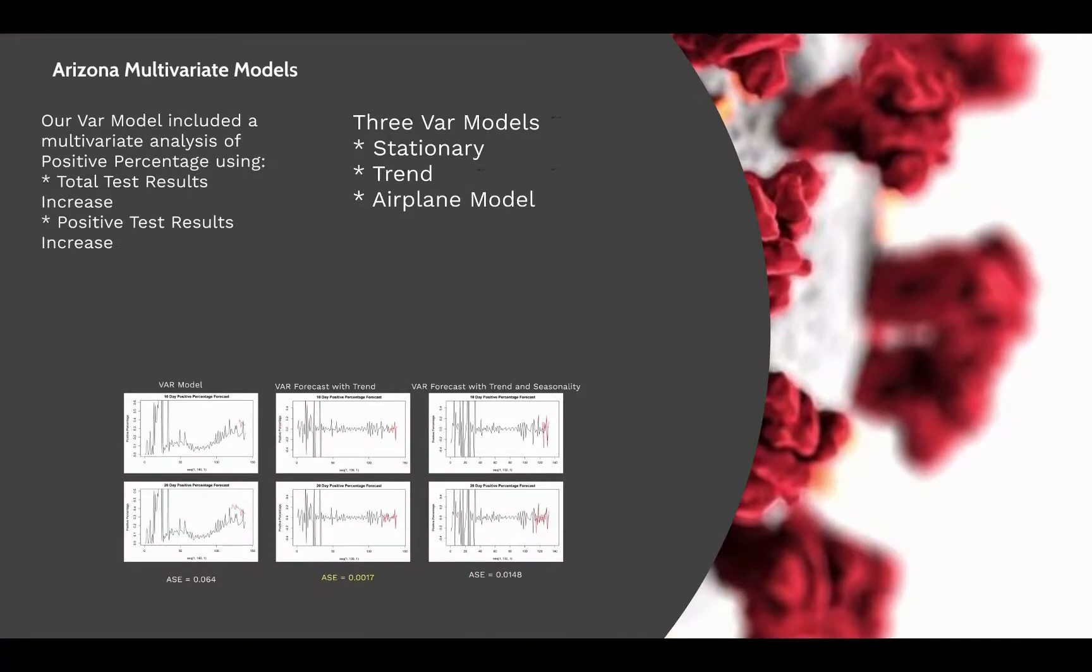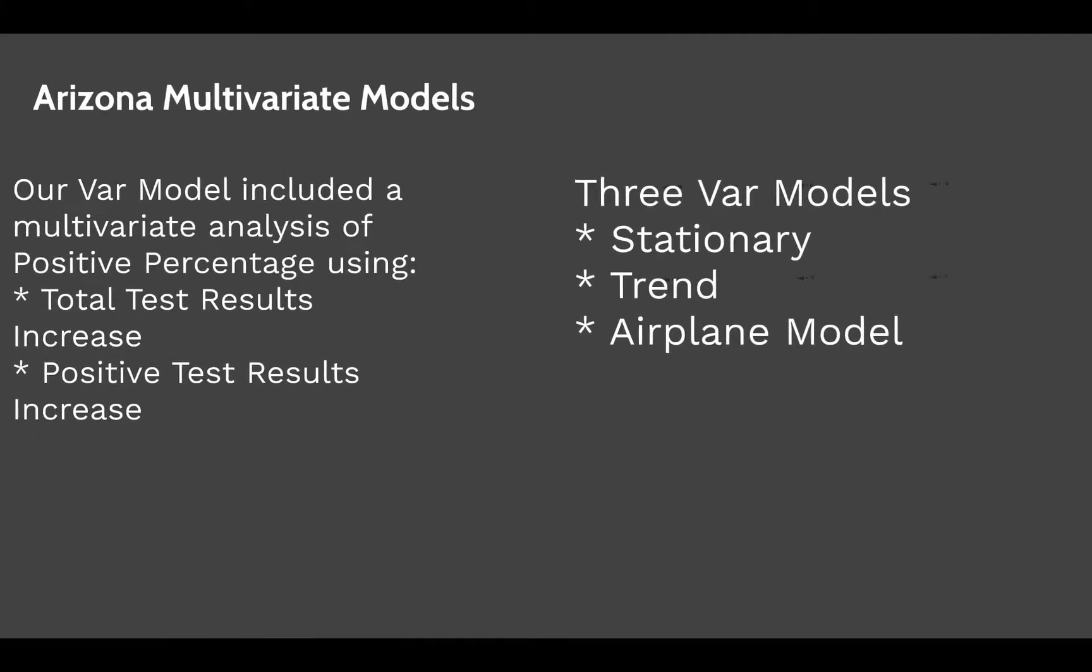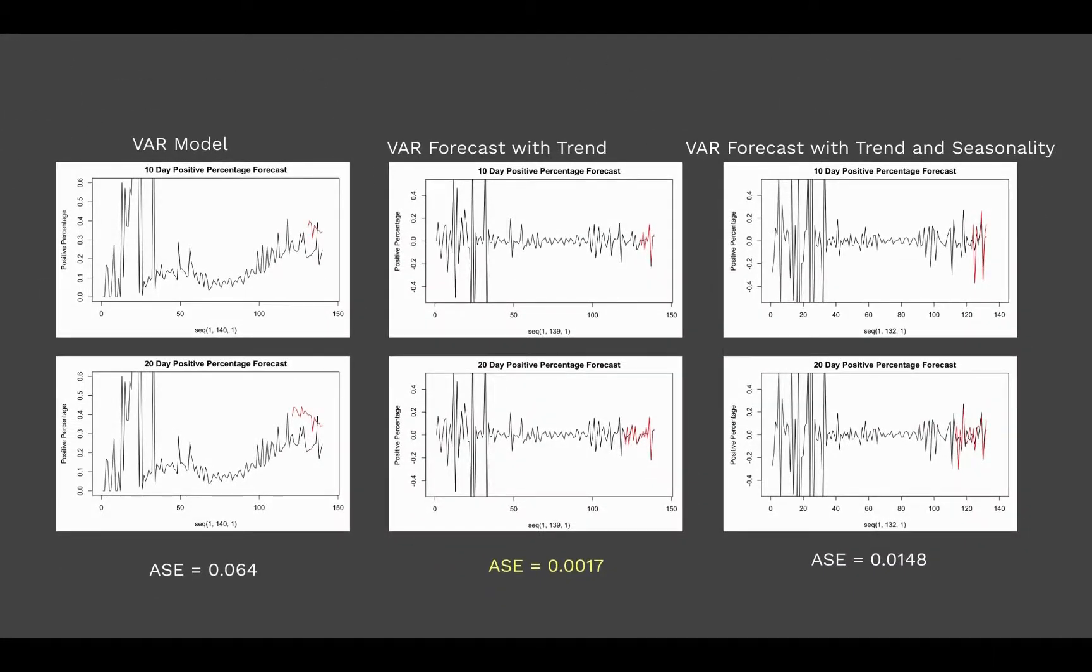So for Arizona we did the exact same thing where we used total test results and positive test results increase as well as three VAR models being stationarity, trend, and airline. And here are our short-term and long-term forecasts as well as their respective ASE scores using the VAR model.